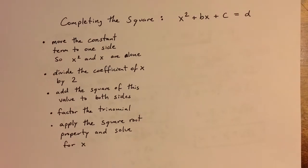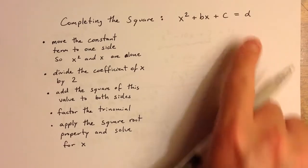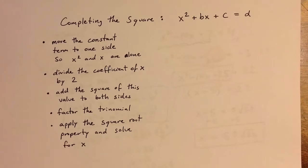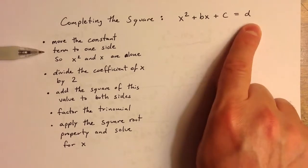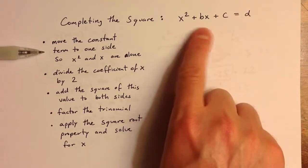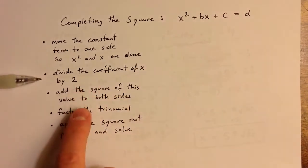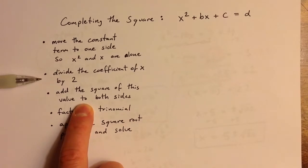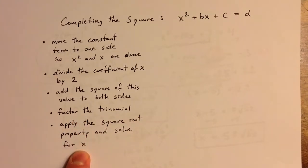To summarize the process: if we have an equation that looks like x squared plus bx plus c equals d, we can solve it by completing the square. That means we move the constant term c to the other side so that x squared and x are alone. Then we divide the coefficient of x by 2, square that, and add that value to both sides. That gives us a perfect square trinomial that we can factor. Then we apply the square root property and solve for x.